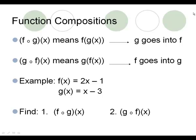Let's do number 1 together. I'm going to circle George's equation and put him into Frank. George's equation is x minus 3, and we're going to replace that as x into Frank's equation. So 2 times (x minus 3) and then minus 1. When you distribute the 2, you get 2x minus 6, and now we have minus 1 after that, which is 2x minus 7 for a final answer.